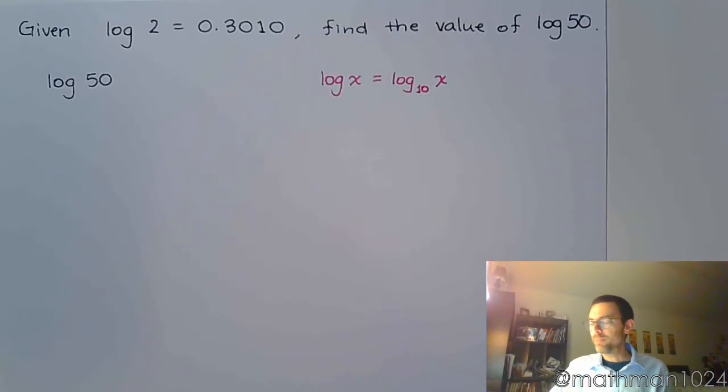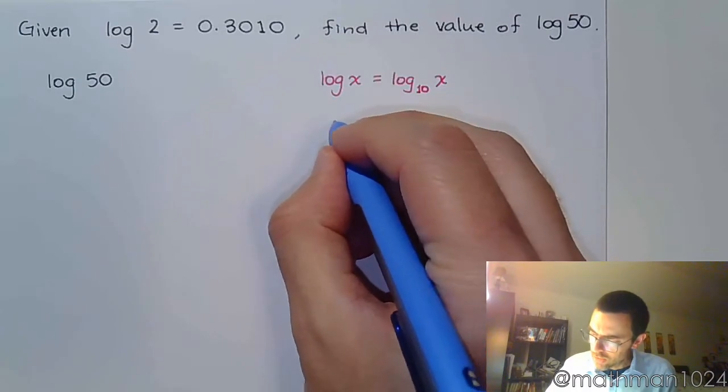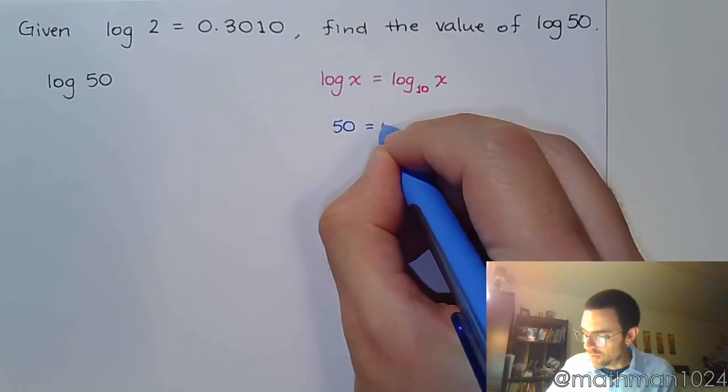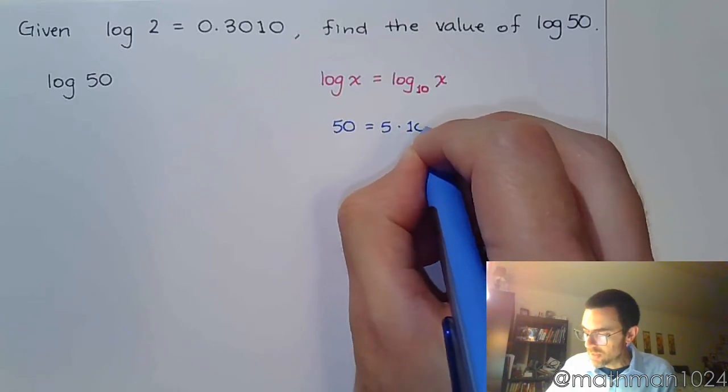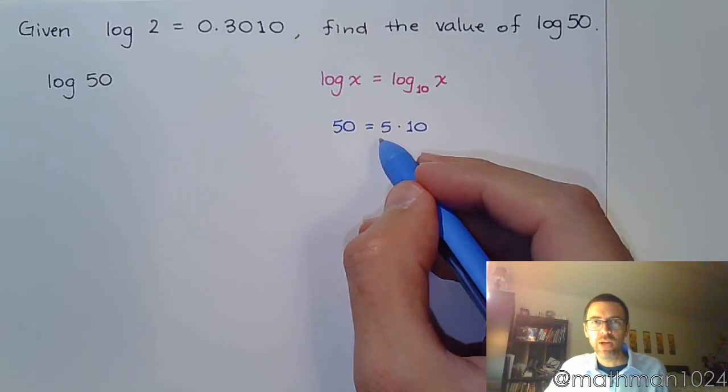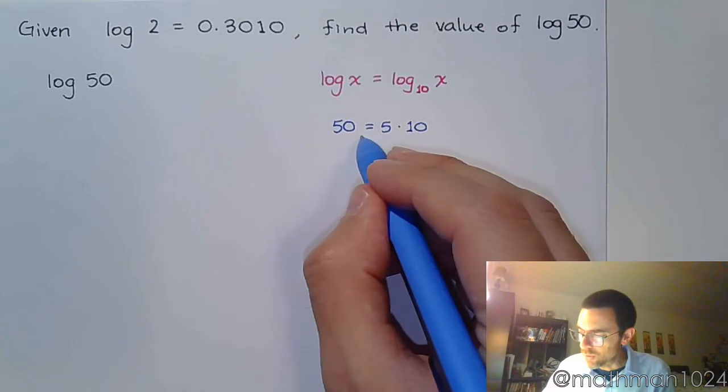Here's what you can do. If we try to play around with this a little bit, 50 is equal to 5 times 10. So that guy's good. But then I'm still stuck with the 5. What do I do with the 5? I don't know log of 5. So maybe we don't do it that way.